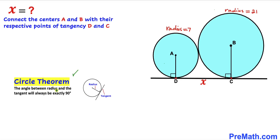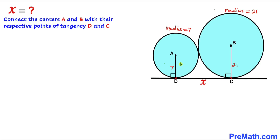Let's recall the circle theorem. According to this theorem, the angle between the radius and the tangent will always be 90 degrees. In our case, AD and BC are our radii and DC is the line of tangency. So these angles are going to be 90 degrees. AD is the radius of the smaller circle at 7 units, and BC is the radius of the larger circle at 21 units.